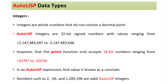AutoLISP data types: first, integers. Integers are whole numbers that do not contain a decimal point. AutoLISP integers are 32-bit signed numbers. However, the getint function only accepts 16-bit numbers ranging from plus 32,767 to minus 32,768. In an AutoLISP expression, that value is known as a constant.